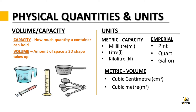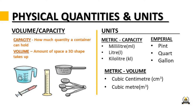Another physical quantity is volume or capacity — these terms are interchangeable. Capacity is how much a container can hold, measured in milliliters, liters, and kiloliters, or pint, cup, and gallon in the imperial system. Volume is the amount of space a 3D shape takes up, measured in cubic centimeters, cubic millimeters, or cubic meters. Note: volume uses a '3' (cubic) while area uses a '2' (square) — it's important to differentiate these two.